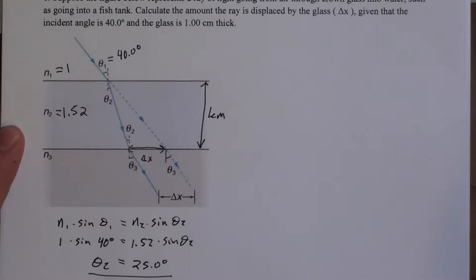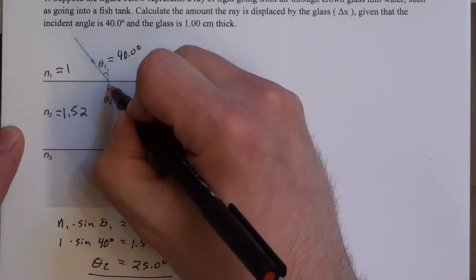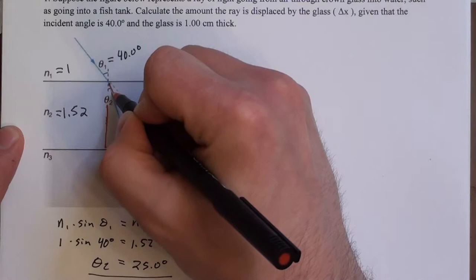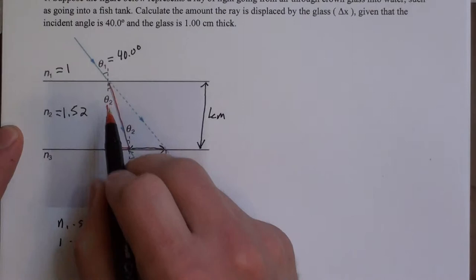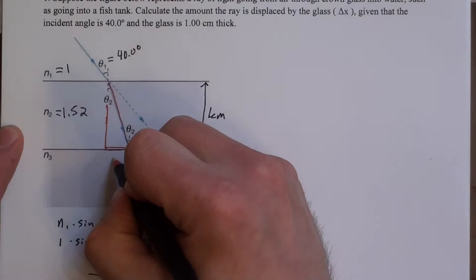Alright, so now I'm going to sketch out a couple triangles here that are going to help us figure out this delta x. We can sketch out this leg of this triangle and label this little triangle, the red triangle, that has theta 2 as this upper angle.